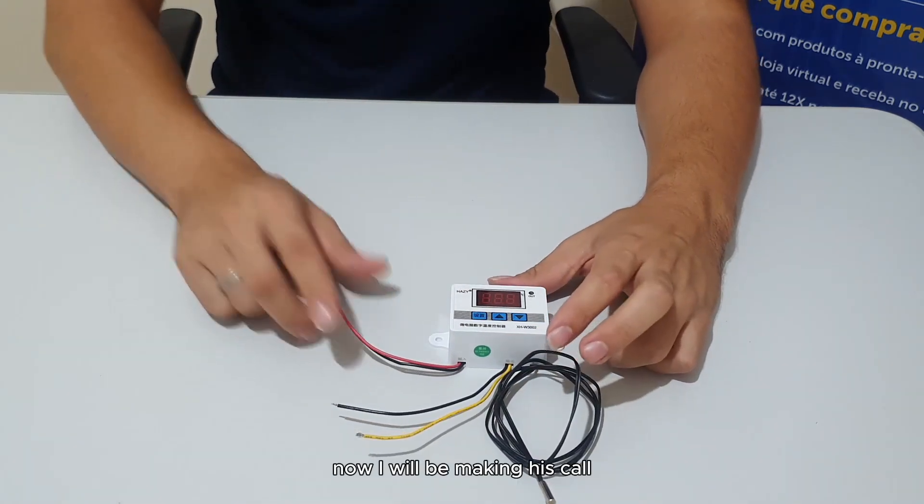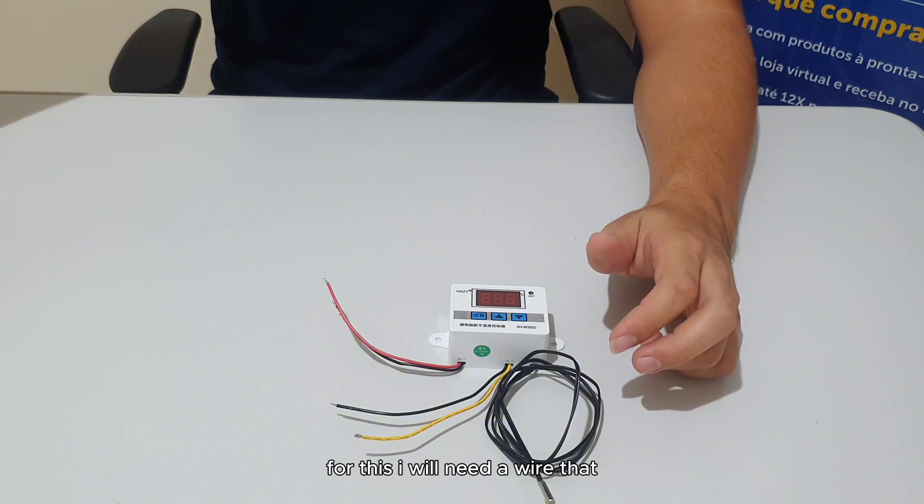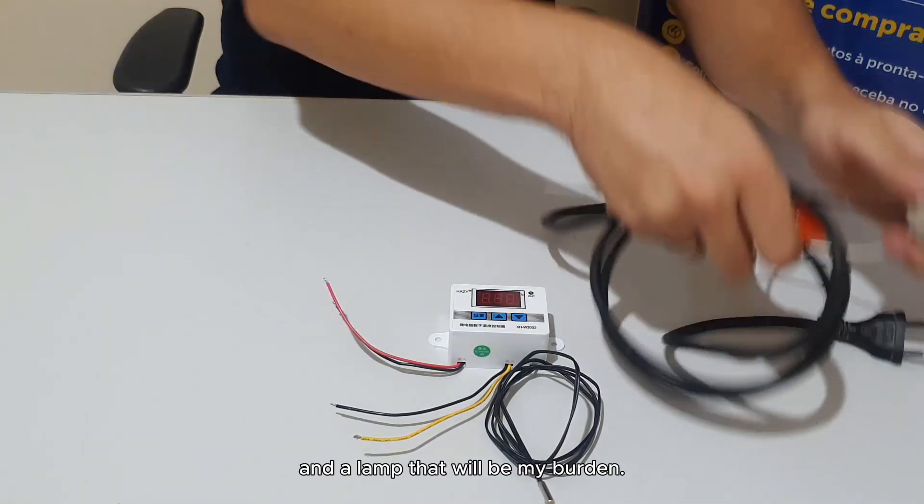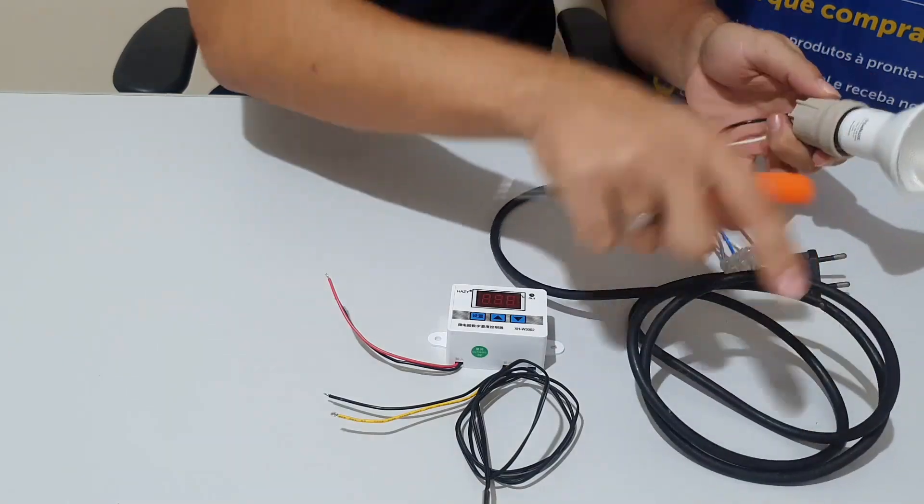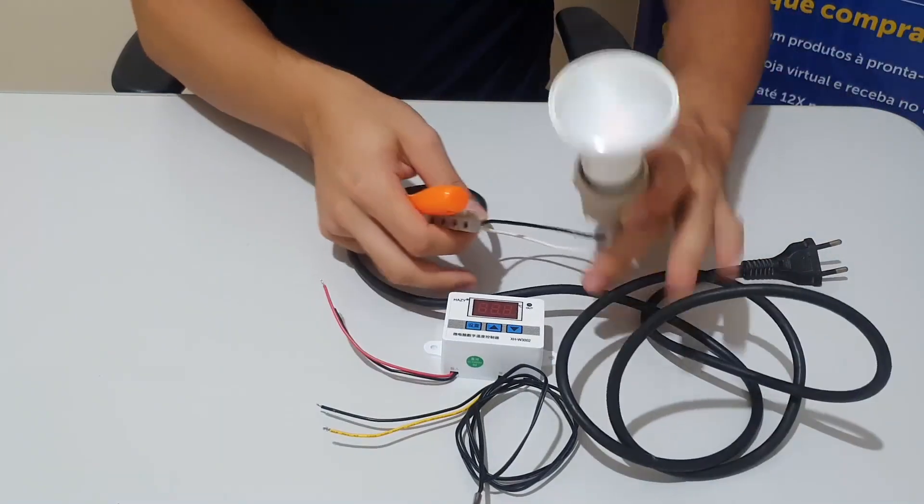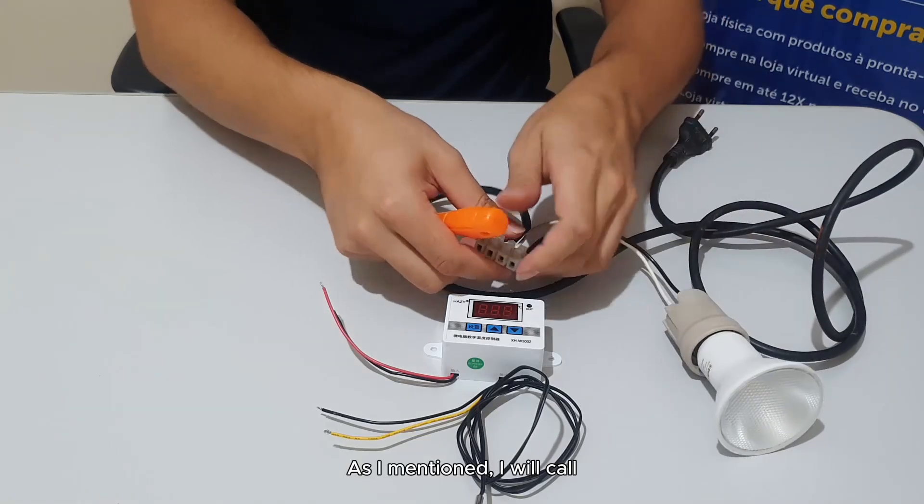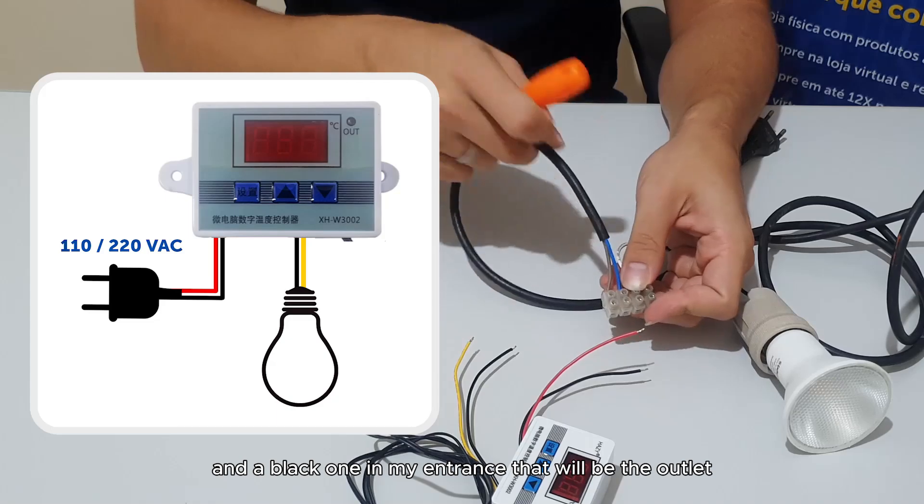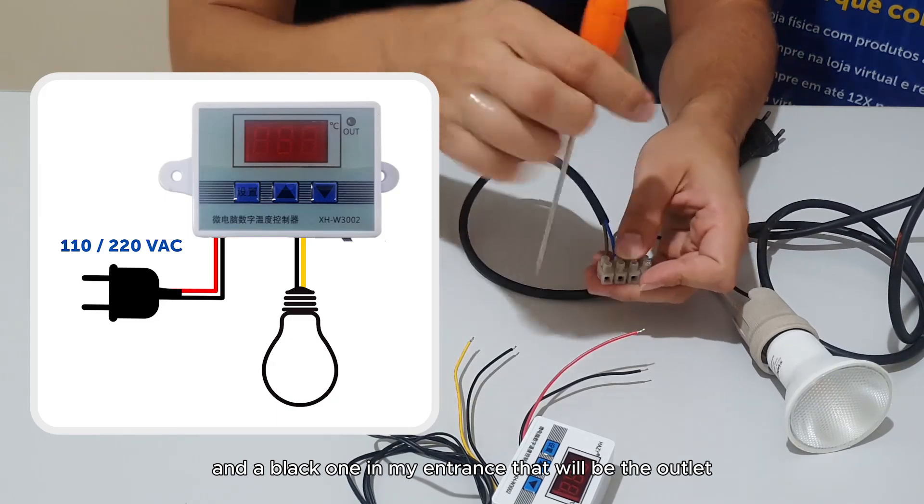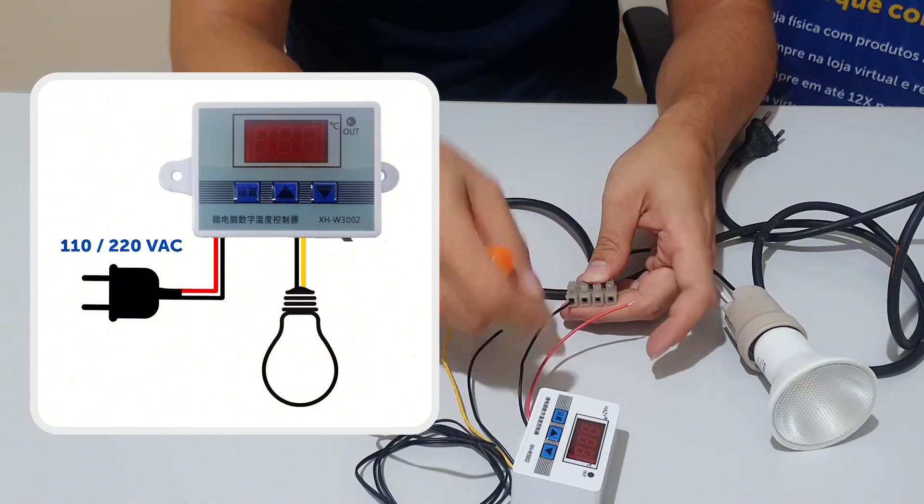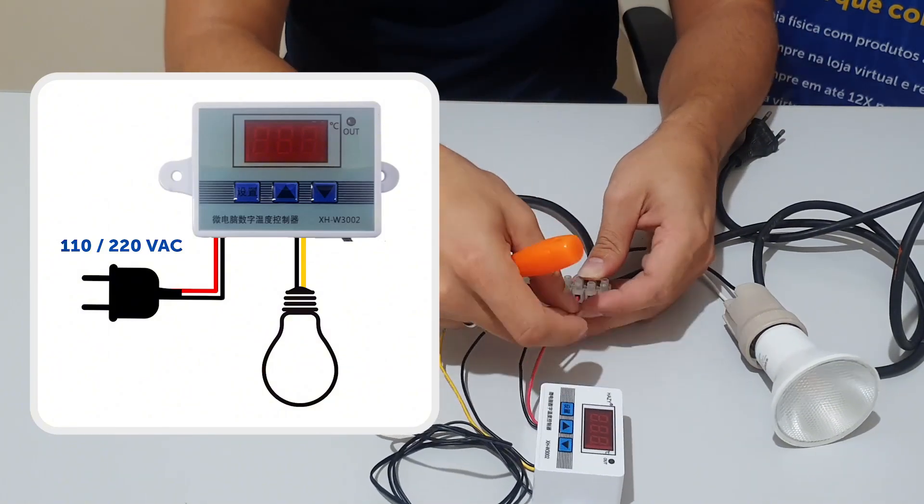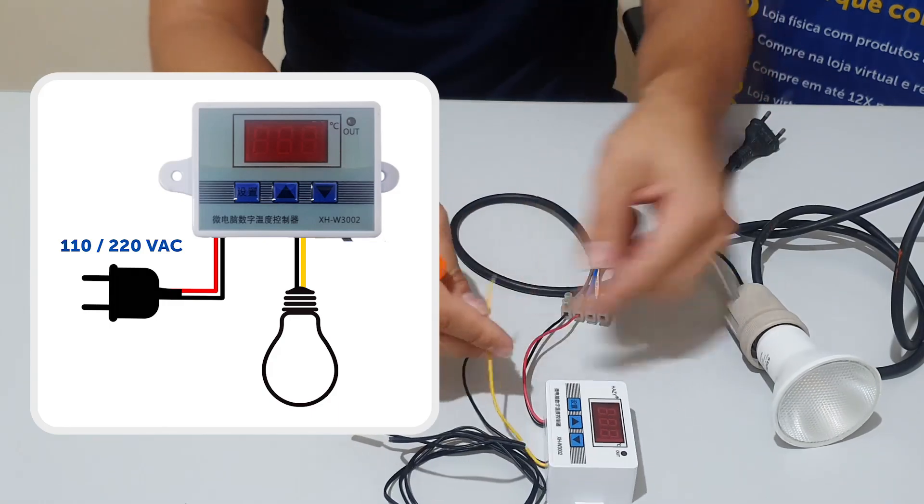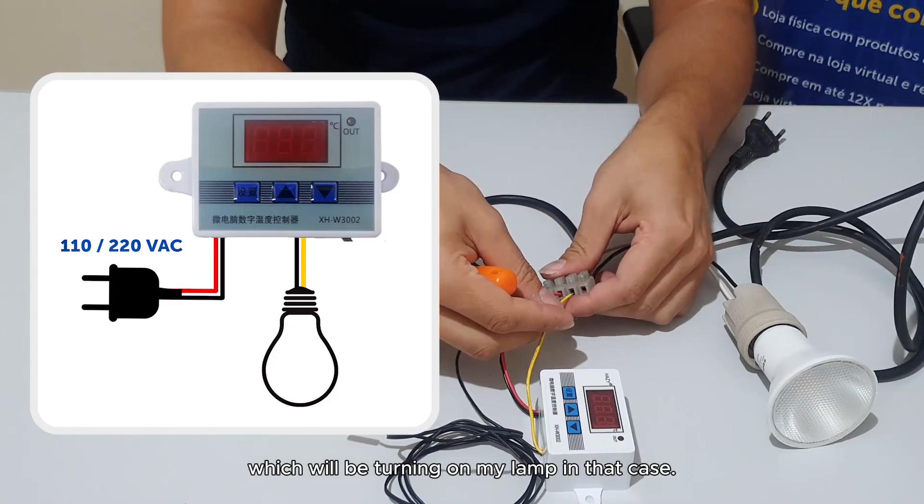Now I will be making the connection. I will need a wire that I will plug and a lamp that will be my load. As I mentioned I will connect the red and black to my input which will be the outlet. And one yellow and one black will be my load which will be turning on my lamp in this case.